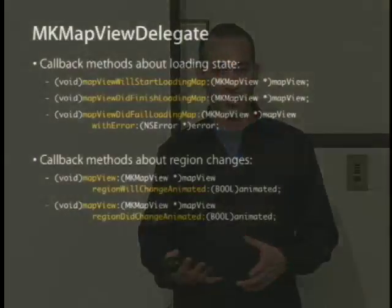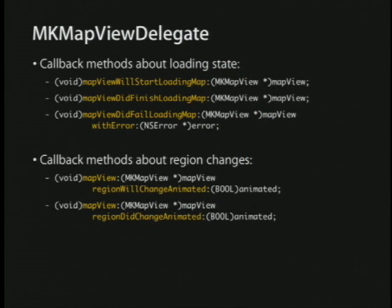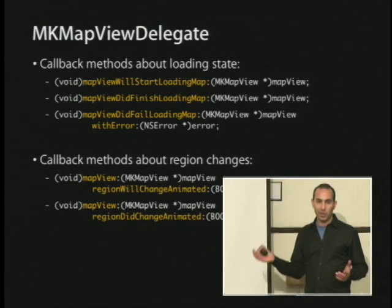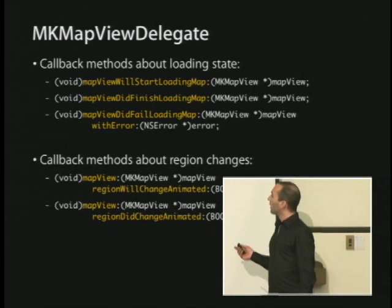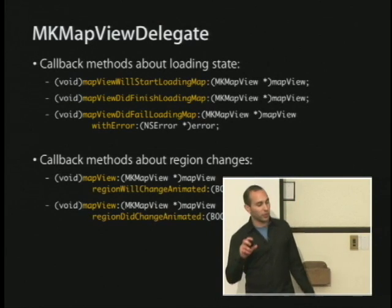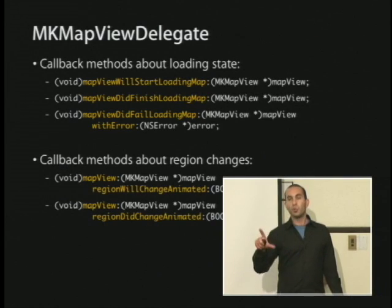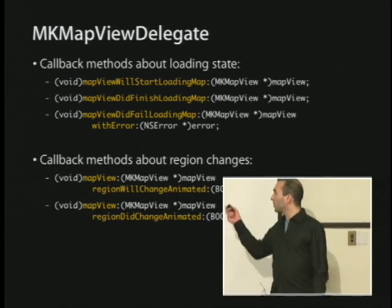And there are some interesting delegate methods that map view gives you. The first set of methods it can tell you about are the loading state of the map. When the user first brings up MKMapView, the map view will automatically start loading its location. You'll get called with 'view will start loading.' When it's done, it'll say 'view did finish loading.' And if there's an error, it'll tell you that. There are also methods about region changes — so if your user is dragging around the rectangle, dragging around the center, zooming in or zooming out, every time that happens, it's going to tell you about that as well.